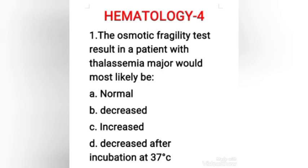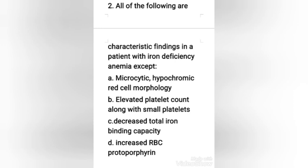First question: the osmotic fragility test result in a patient with thalassemia major would most likely be — normal, decreased, increased, or decreased after incubation at 37 degrees Celsius? The right answer is option B, decreased. The osmotic fragility test is decreased in thalassemia major patients because numerous target cells are present, which have an increased surface-to-volume ratio, resulting in decreased osmotic fragility.